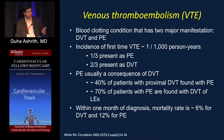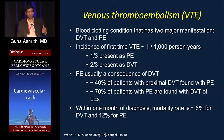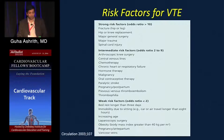One month after diagnosis of PE, mortality is about 12%, and about 6% with DVT. Granted, not all of those deaths are directly from PE or DVT — many patients have underlying conditions contributing to increased mortality — but VTE is associated with significantly increased mortality.